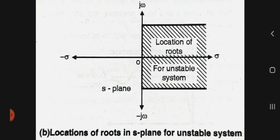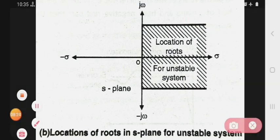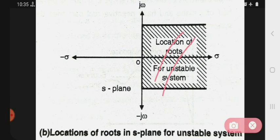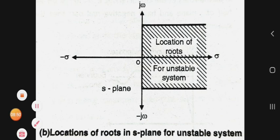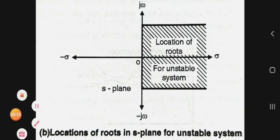Then this is the location of roots in S plane — kya hai, kaha pe hai: S plane mein hai, lekin root locations for unstable system — yaha pe kya hai, positive part hai aur right half of the S plane mein hai. So this is the unstable system — location of roots in S plane for unstable system. So in this way, this is the detailed description of concept of stability and the types of system. Thank you.